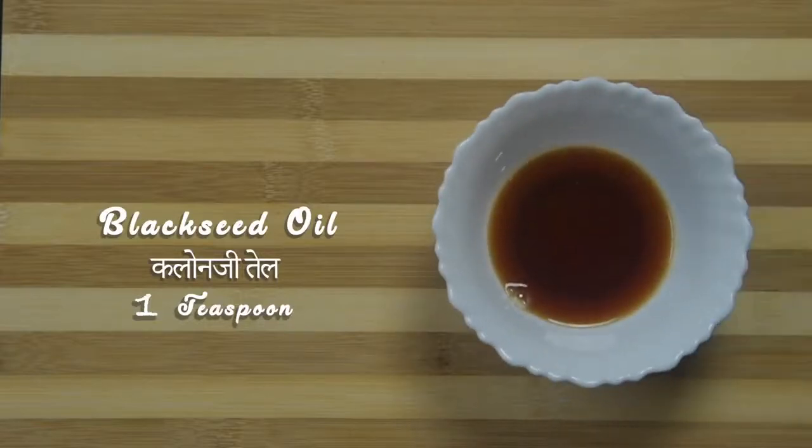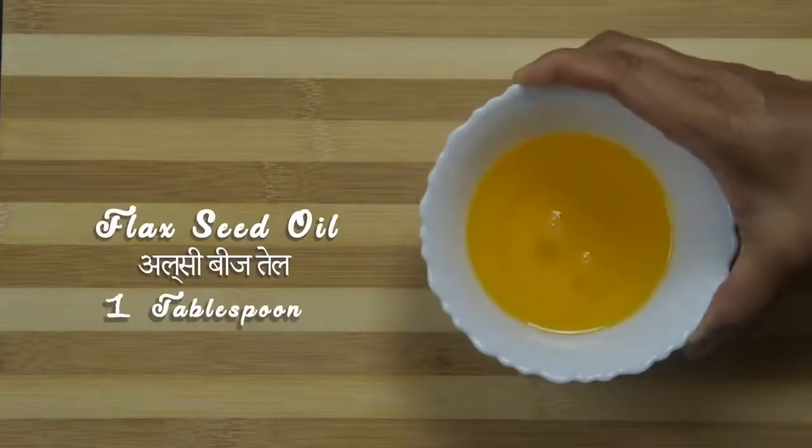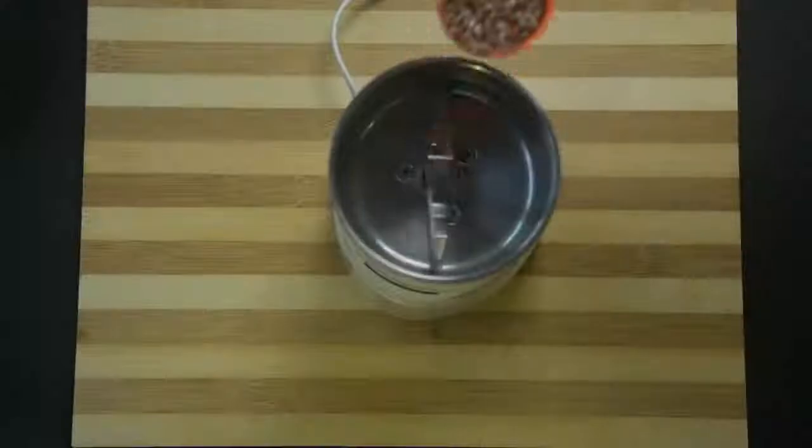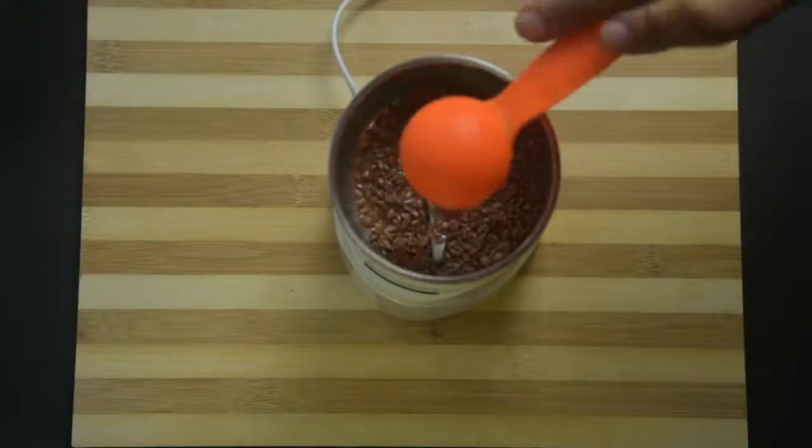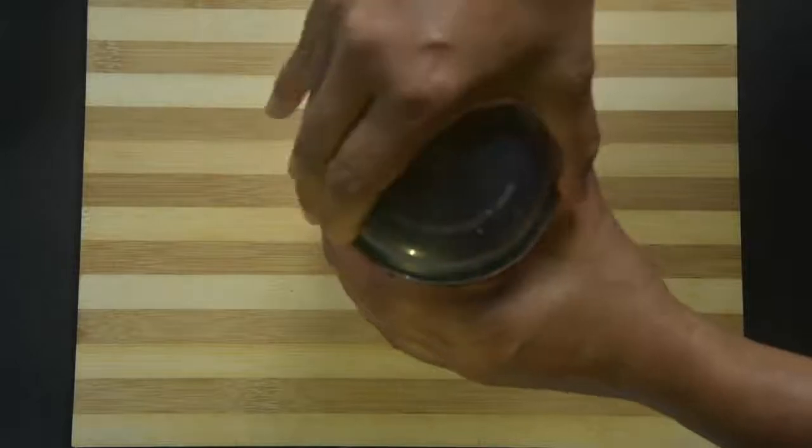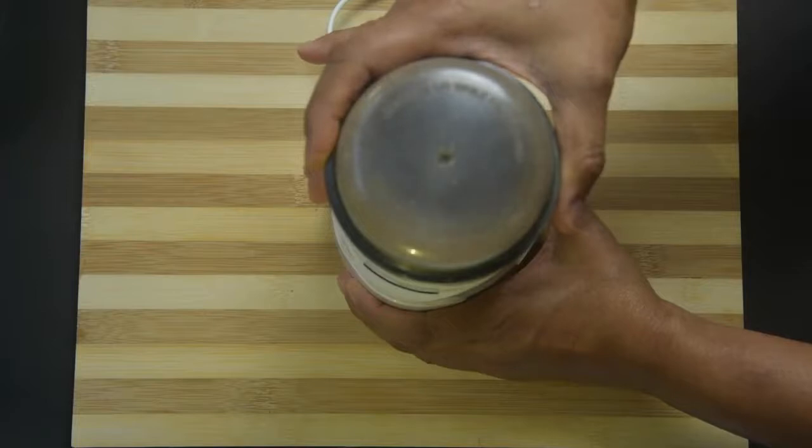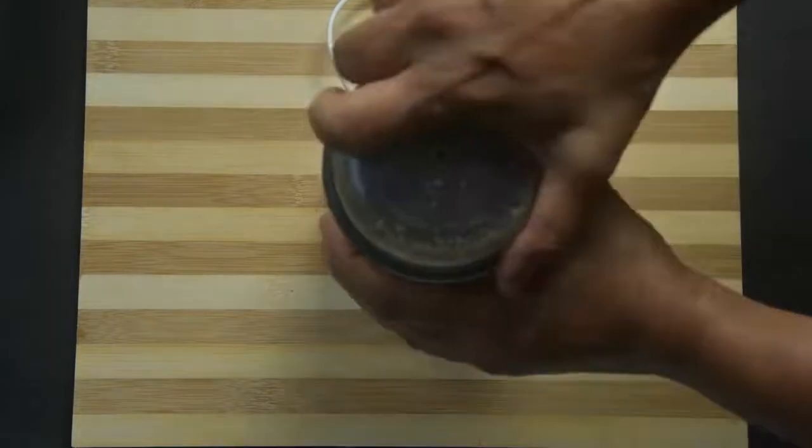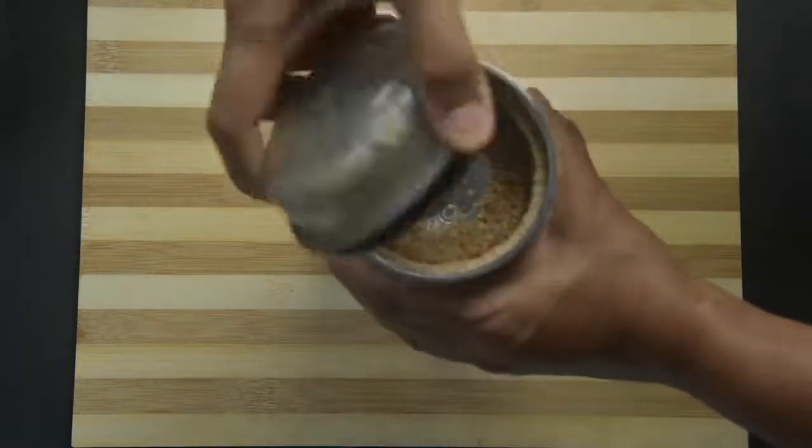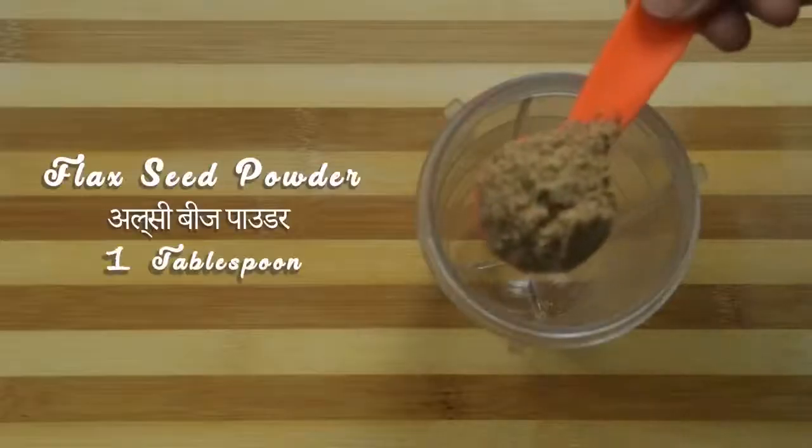Take flax seeds into a coffee grinder or small jar of a mixer grinder. Make a fine powder of this. Take this fine powder to a wet jar of a mixer grinder.